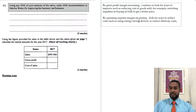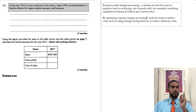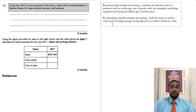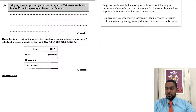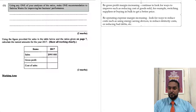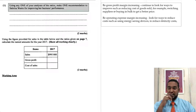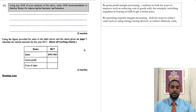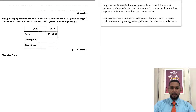With the operating expense margin, that increase is a problem, so we want it to decrease. Look for ways to reduce costs, such as using energy-saving devices to reduce electricity costs, or reducing bad debts. You have different suggestions for this — different things you could put. The sky's the limit. So that was two marks.